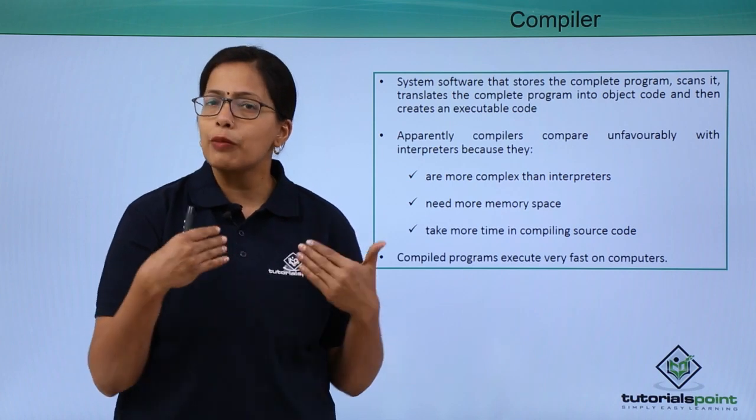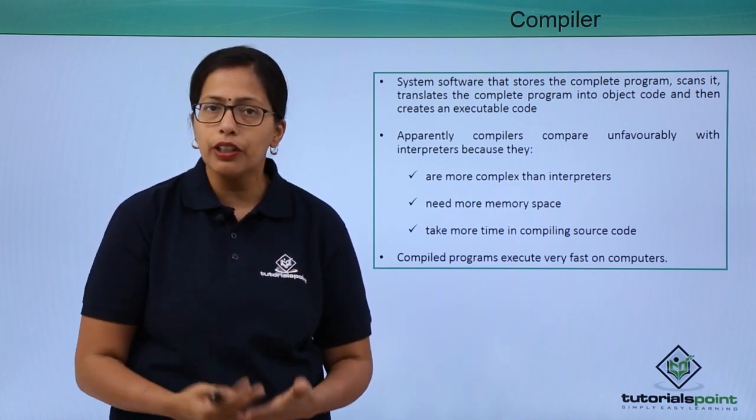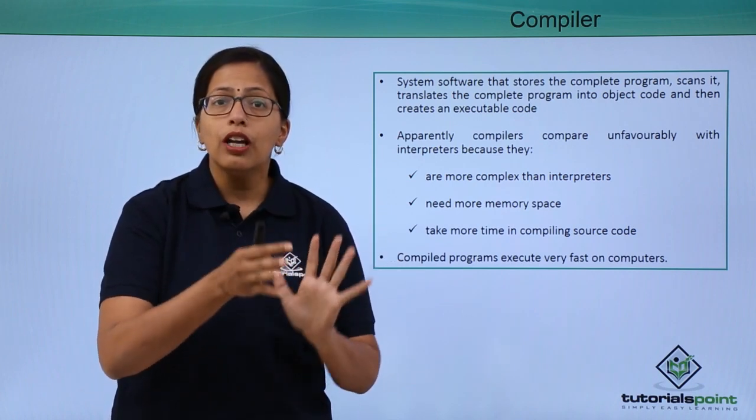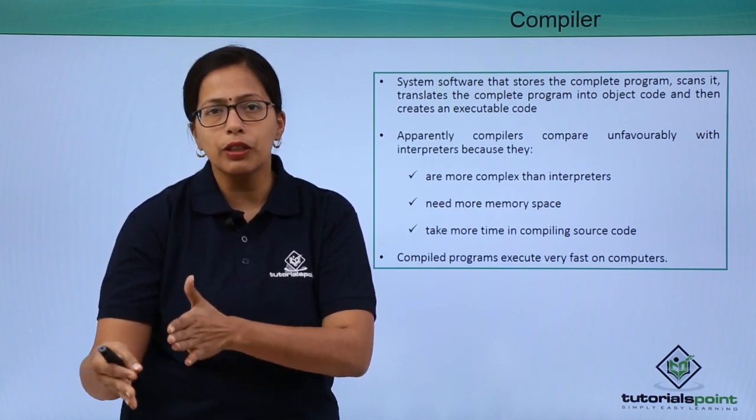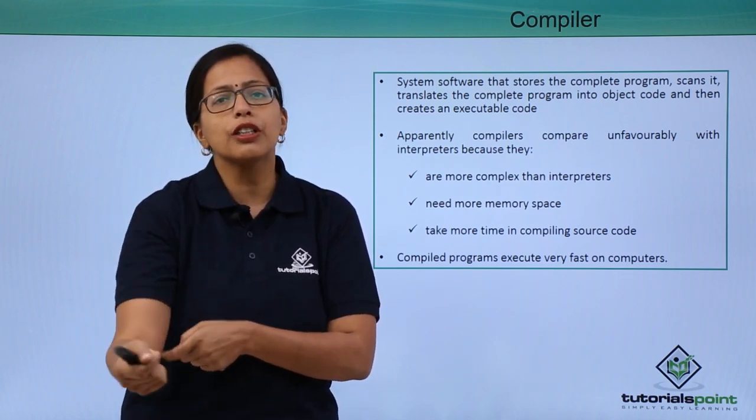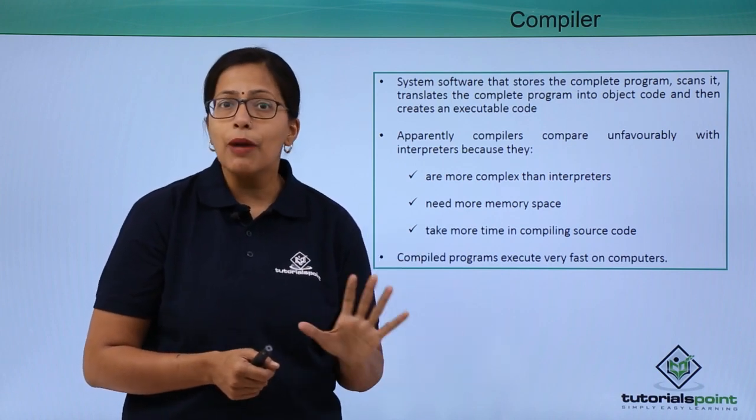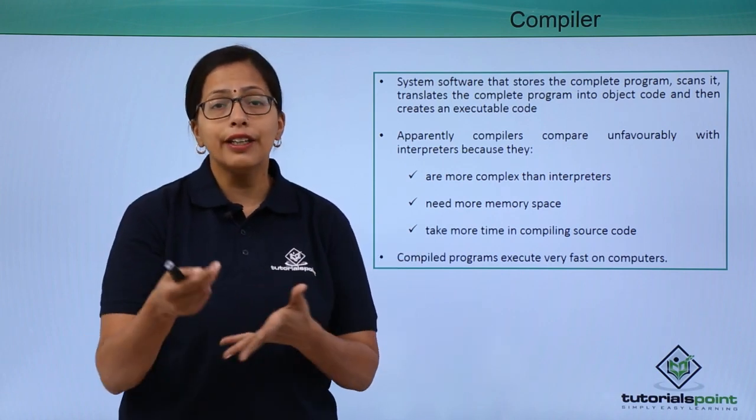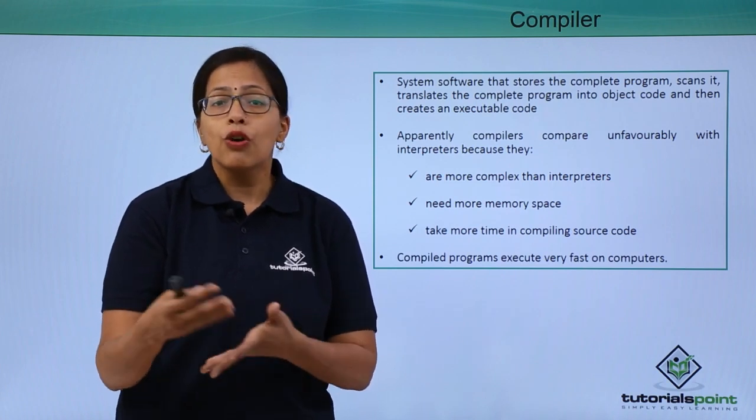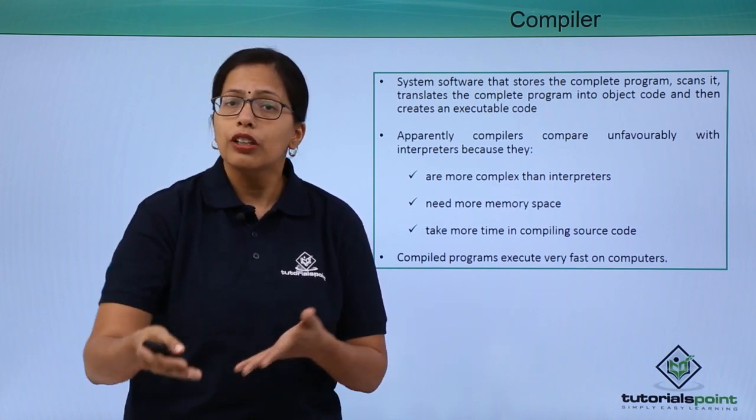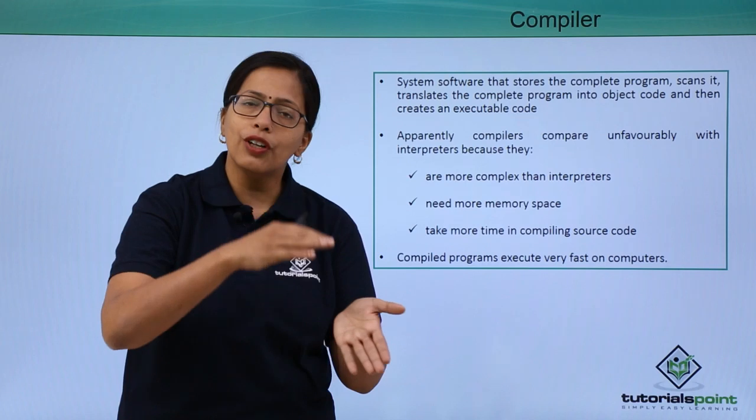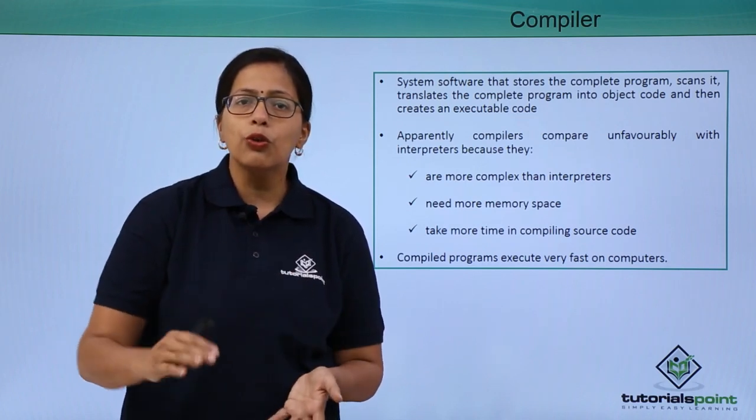So if I'm a programmer or software developer, I'll write that code, convert it into executable code and give it to the user. The user will just put it into his or her system and it will run straight away. Imagine if I just give an interpreted code or source code or object code. Then what will happen? It has to be converted into executable code at the end of the user. It will take lots of time and any user will have problems with that.